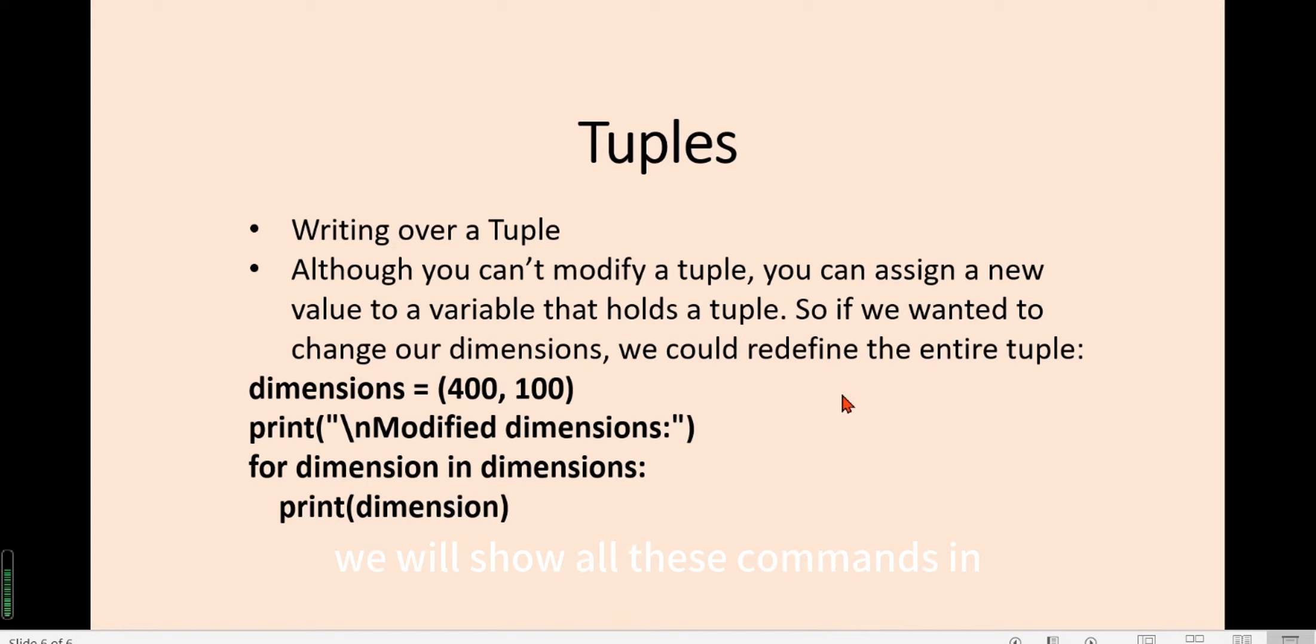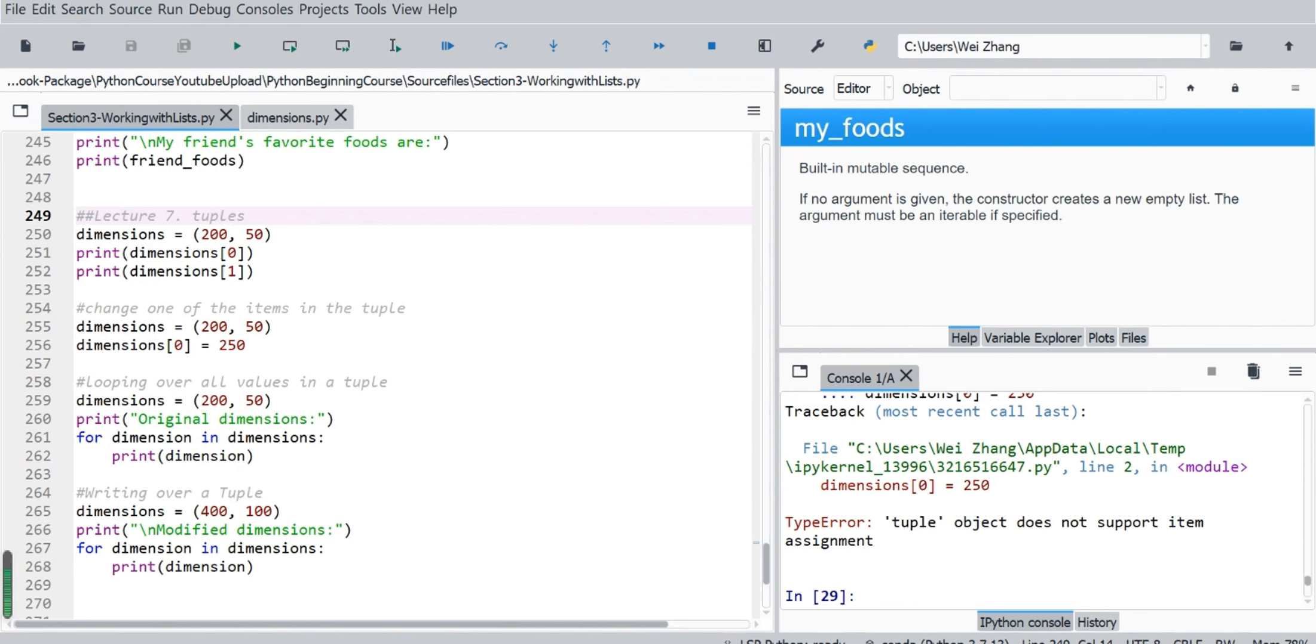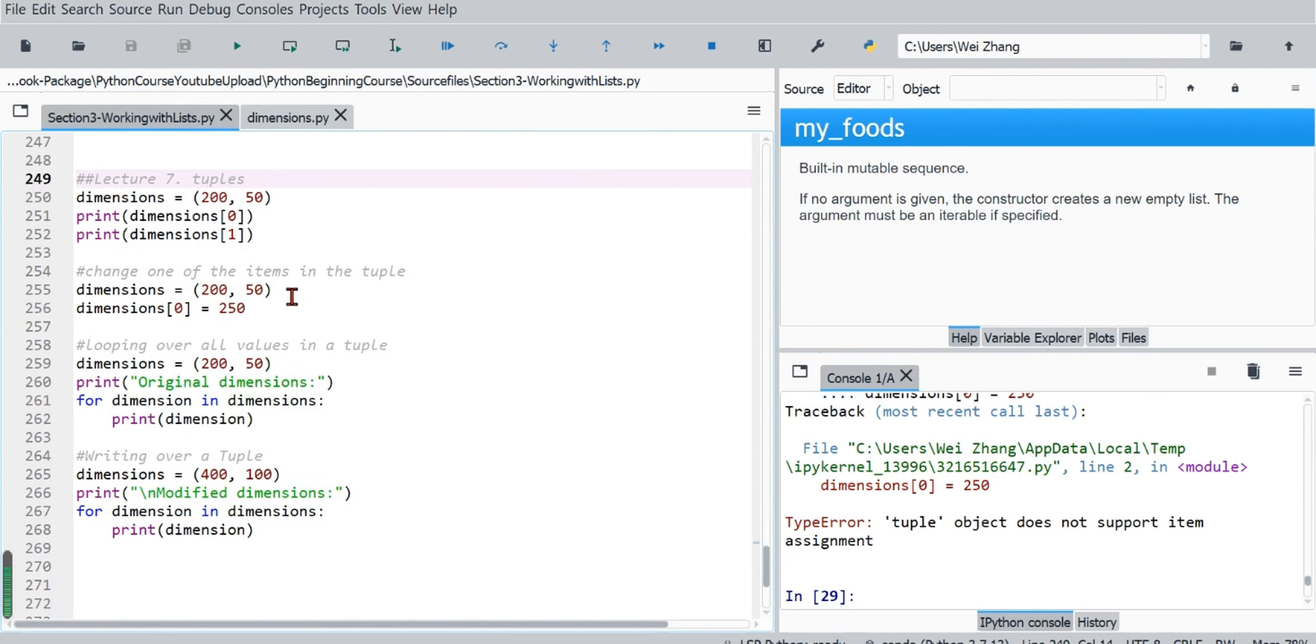We will show all these commands in Anaconda Spyder. So we go to Lecture 7 Tuples. First we create a tuple with 200, 50 elements inside.